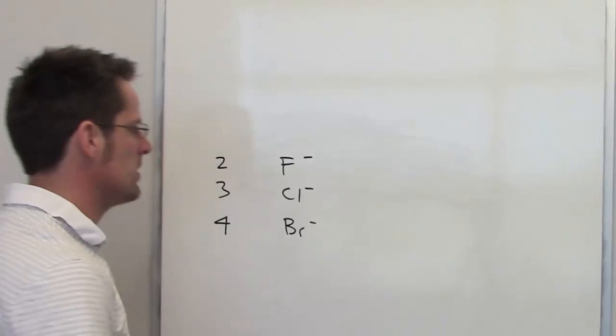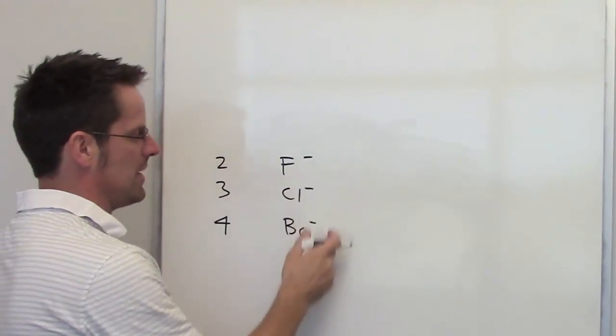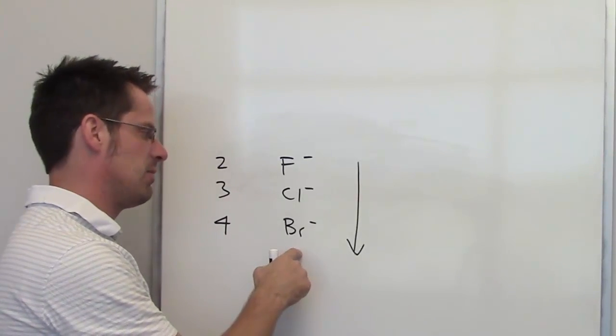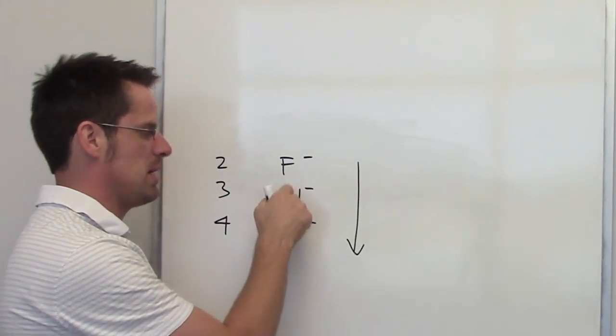Hence, the trend that we would see for these ions going down a column would be the same as we would for their neutral counterparts. Largest will be at the bottom, followed by the medium, followed by the smallest.